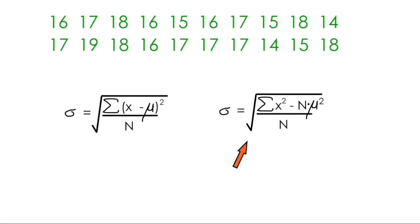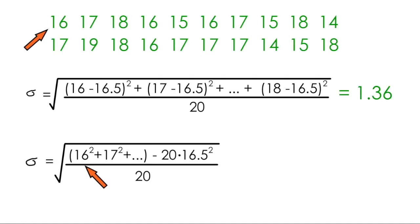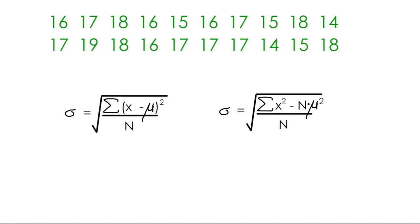I can also choose to use the second standard deviation formula, which behaves in a similar way. I can take each data value in the set and square it and add them all together. I can subtract the number of data values times the mean squared and divide by the number of data values. After taking the square root of all of that, you'll see that you also get 1.36. So both of these standard deviation formulas give us the same result.